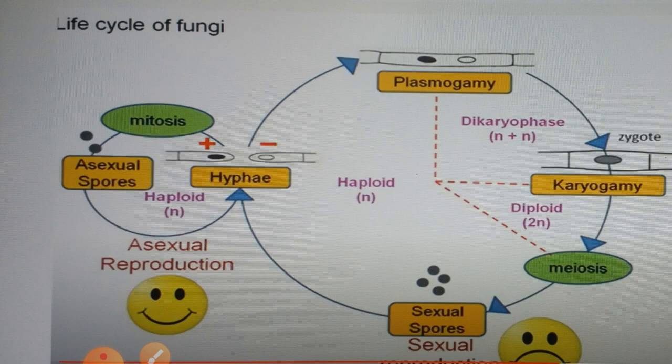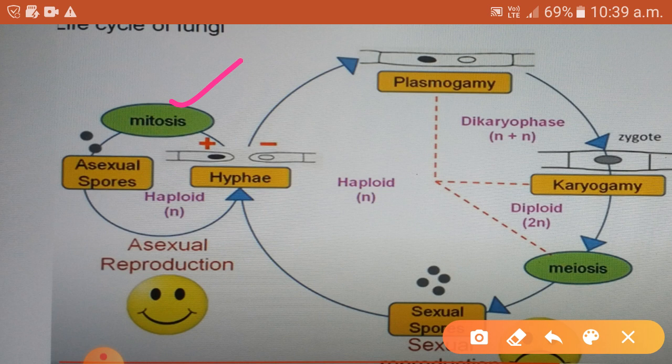About the life cycle of fungi: the haploid hyphae will form asexual spores through mitosis, and each spore on germination will give rise to a haploid hyphae. Haploid means the nucleus of the hyphae cells contains half the number of chromosomes, or one set of chromosomes, indicated as n. For example, in the case of Penicillium notatum, the chromosome number is 4, so a haploid cell will contain only 2. This is the asexual reproduction cycle of fungi.